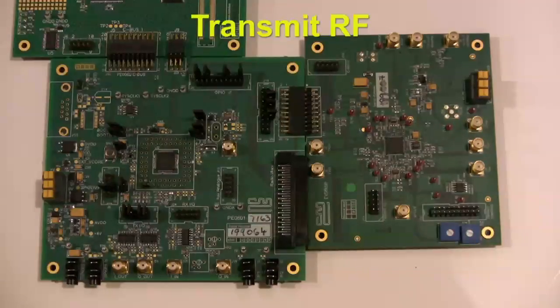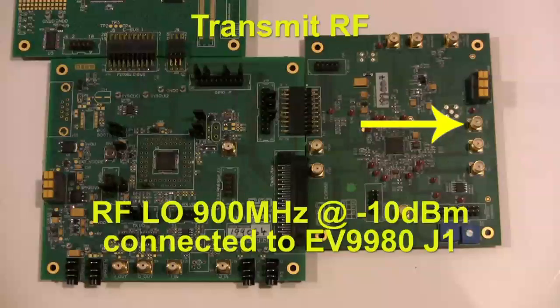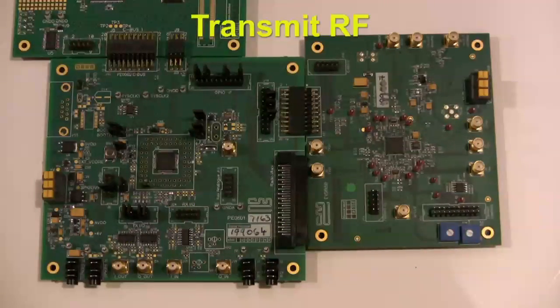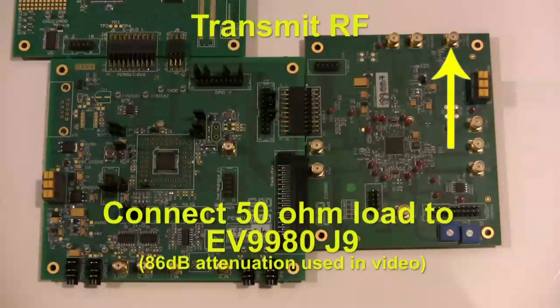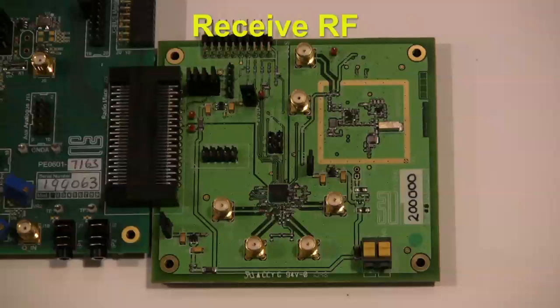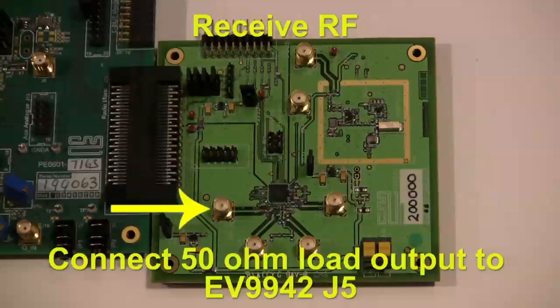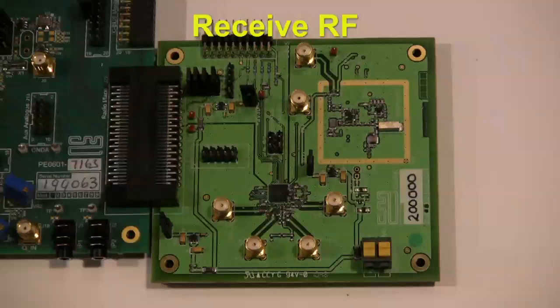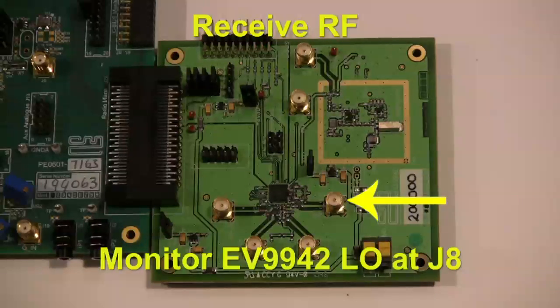Now we can move to the RF connections. For the transmit RF LO, connect an RF signal generator to the EV9980 LON SMA connector. Connect a 50 ohm load to the TXOUT 400 MHz SMA connector on the EV9980. We will use 86 dB of external RF attenuation in this test. Connect the other end of the load to EV9942 LNA-N SMA connector. The LO source for the receive EV9942 is provided by its onboard VCO. This signal can be monitored on EV9942 TX LO out SMA connector if desired.